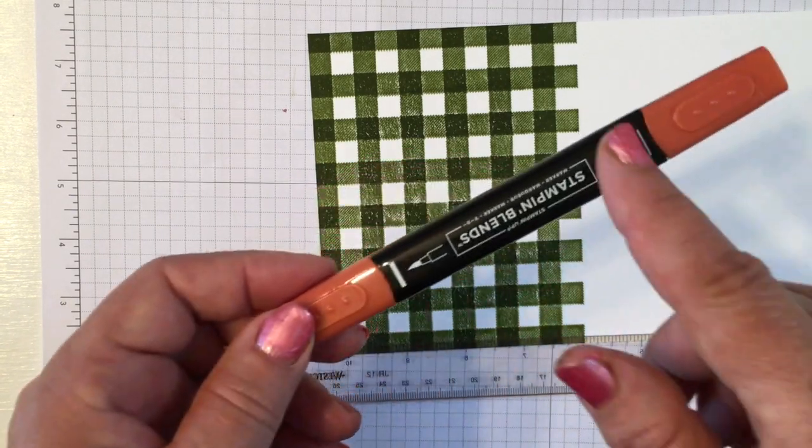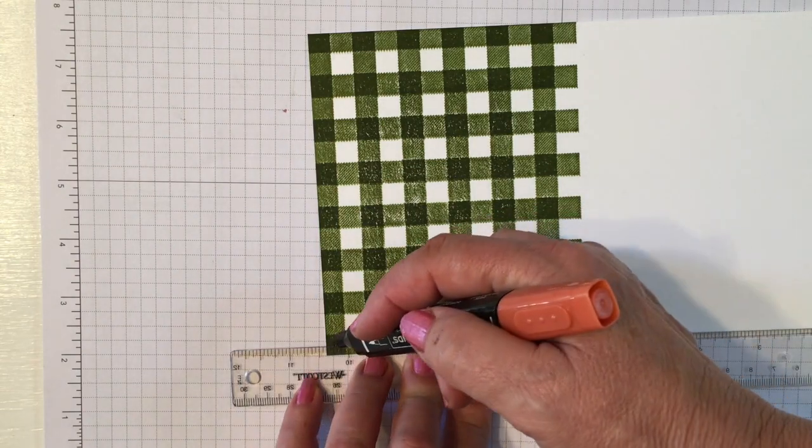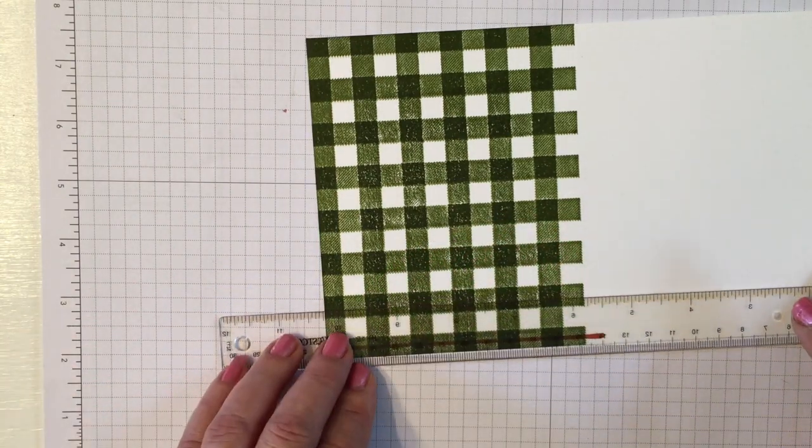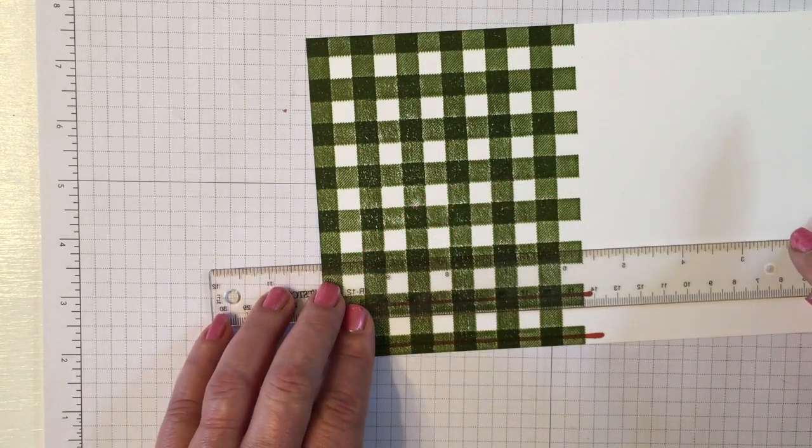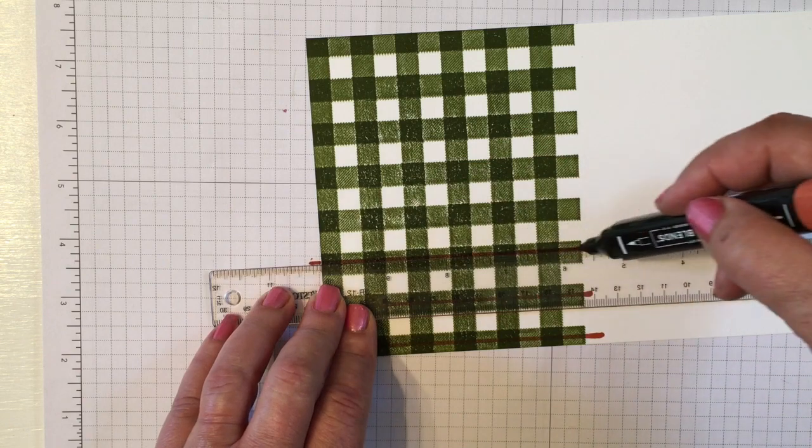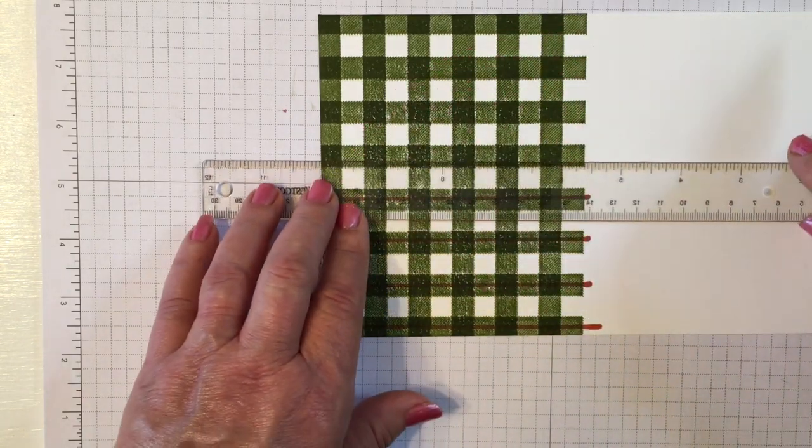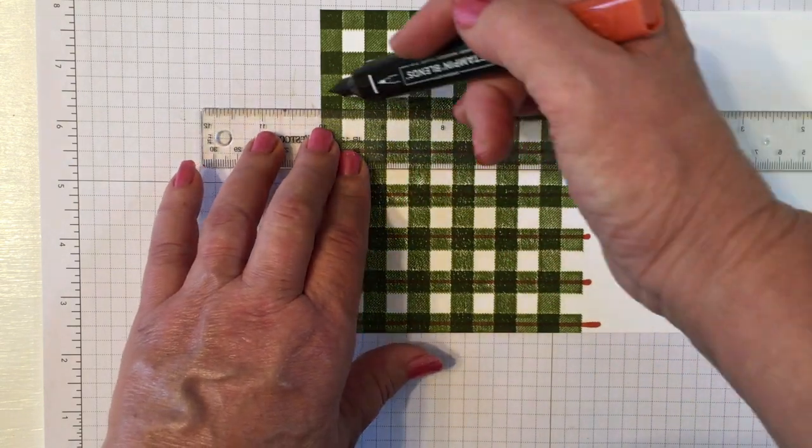I'm going to start with my Cajun Craze. There's a brush tip and a narrow tip and I'm going to use the brush tip for my Cajun Craze and you'll notice that I am starting off the card going past where I need. That way you don't have any start and stop marks.